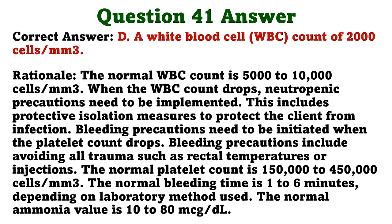The nurse is caring for a client with a suspected diagnosis of aplastic anemia. Which tests should the nurse anticipate to be performed to confirm the diagnosis? A. Schilling test. B. Sickle cell screen. C. Bone marrow aspiration. D. Complete blood cell count. The correct answer is C: bone marrow aspiration. A bone marrow aspiration will identify aplastic anemia and will identify pancytopenia, a deficiency in erythrocytes, leukocytes, and thrombocytes. A Schilling test is diagnostic for pernicious anemia. A sickle cell screen is diagnostic for sickle cell anemia. A complete blood cell count will identify anemia but may not identify the specific type.